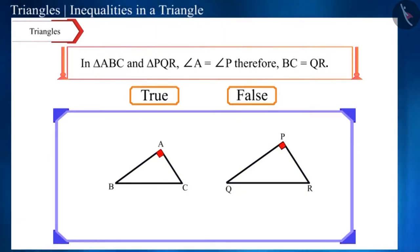But, the length of their opposite sides, side BC and side QR, are not equal to each other. Therefore, this statement is false.